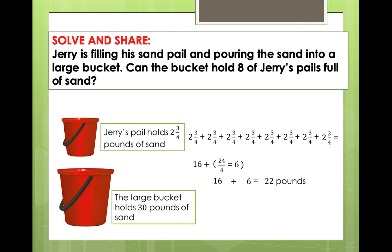Now we have another way: simply multiply 8 and 2 and 3 fourths. First, we decompose 2 and 3 fourths into 2 plus 3 fourths, and after that we multiply. So 8 times 2 plus 8 times 3 fourths gives 16 plus 24 over 4. Same thing: 16 plus 6 equals 22.